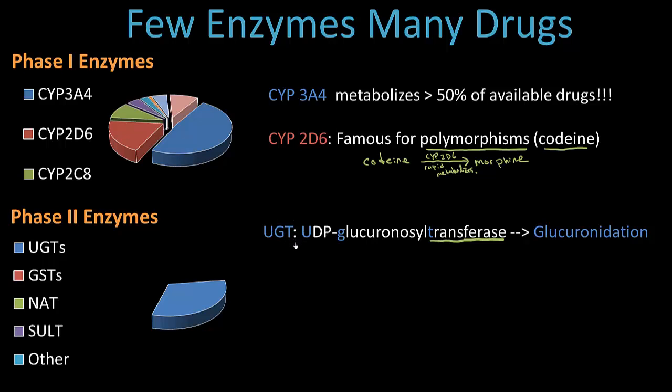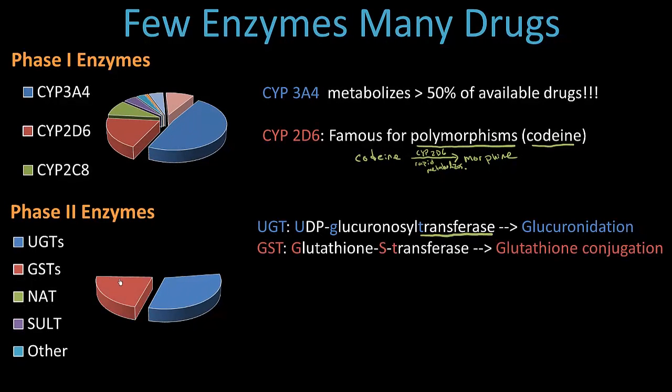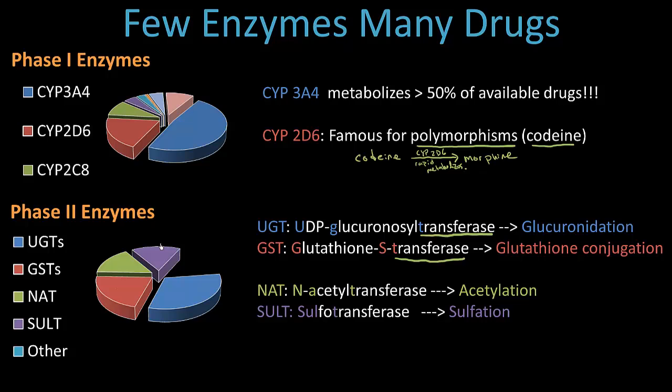Now, we have other enzyme names so what is GST? Well, GST is glutathione S-transferase. As the name implies, we are transferring a glutathione onto a molecule. And so, that process is called glutathione conjugation. How about NAT? You should know this one. We mentioned it last time. This is N-acetyltransferase. It does acetylation. And SULT, sulfotransferase. I just want you to get familiar with the names of the enzymes and how they work. And then we have a couple other ones here that I'm not going to mention right now.